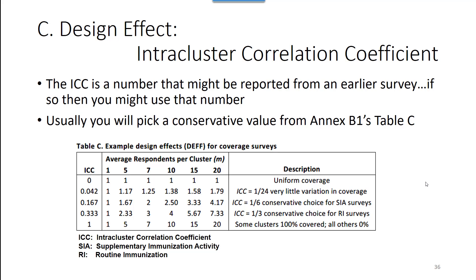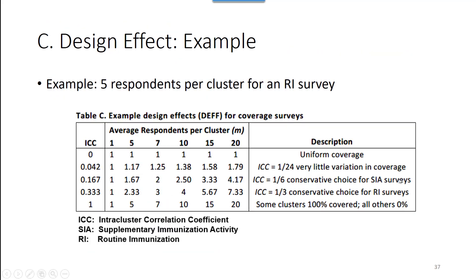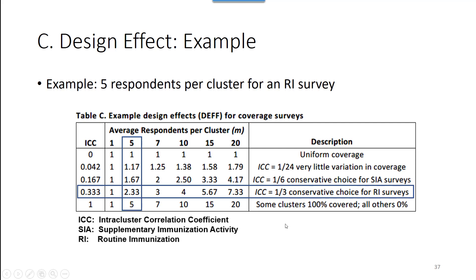Table C in Annex B1 is what we use to calculate the design effect. In this example, we're expected to get data on average from 5 respondents per cluster, and we're doing a routine immunization, or RI, survey. We can see that we're looking in the column for 5 respondents per cluster. A conservative choice for routine immunization surveys is an ICC of one-third, so we'll be looking in that row. The intersection of that row and column gives us a design effect of 2.33 — that's the value we'll carry forward into the sample size calculations.